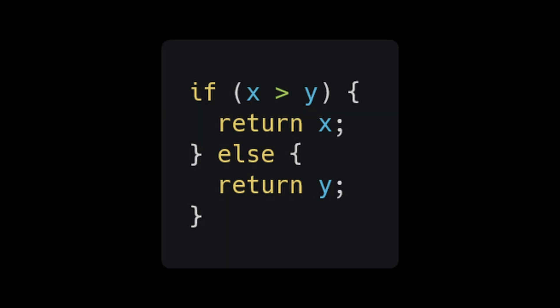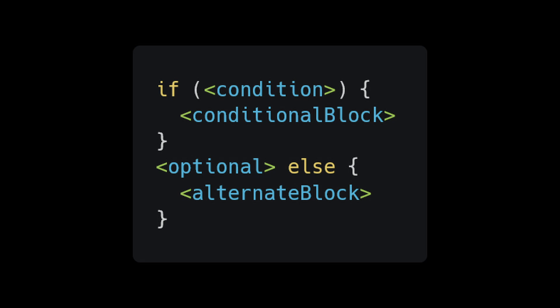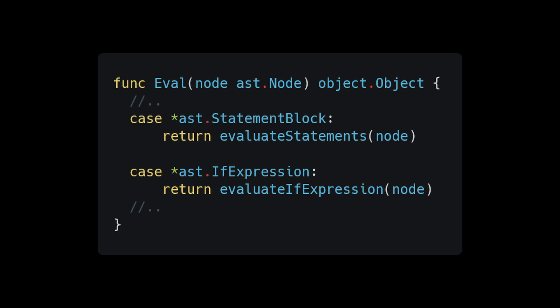The first thing we are going to add are conditional statements. Remember that a conditional takes the following form: we have 'if' followed by some condition, then a conditional block of code to execute. There's also the option to include an alternate block that executes when the condition is false. To add support for this, add the following cases to the top level eval function. The statement block case is easy as it just calls the evaluate statements method we have already created.